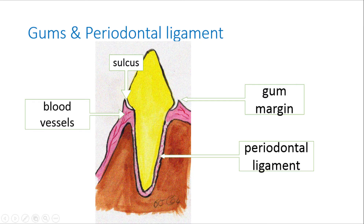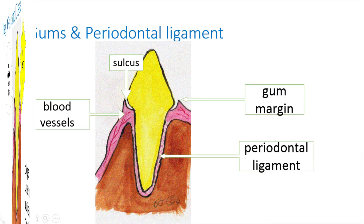Do you see the nice sharp gum margins? The blood vessels that are in the gums and around the root of the tooth form a crosshatch pattern called the periodontal ligament, and it keeps the root of the tooth in the jaw bone so that the tooth doesn't fall out.